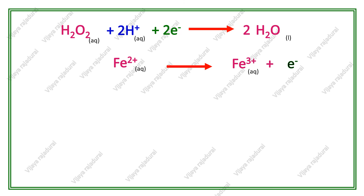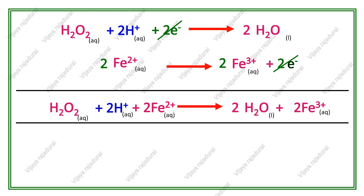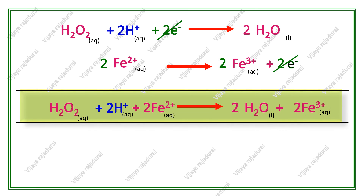The next step is balancing the electrons. The reduction reaction has 2 electrons and the oxidation reaction has only 1 electron. To equalize, we multiply the oxidation reaction by 2. We then cancel out the 2 electrons from both sides to get the final balanced equation: H2O2 + 2H+ + 2Fe2+ gives 2H2O + 2Fe3+.